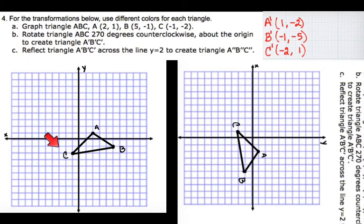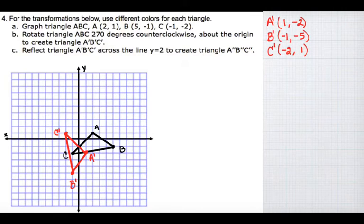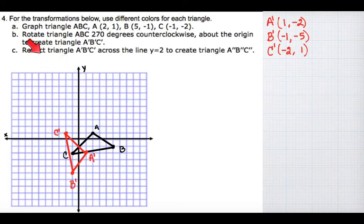Now I'm going to take these coordinates and graph them right here — that should give me my rotation. My rotated triangle should look like this right here: here's A prime, B prime, and C prime. That's my rotation — that's part B.